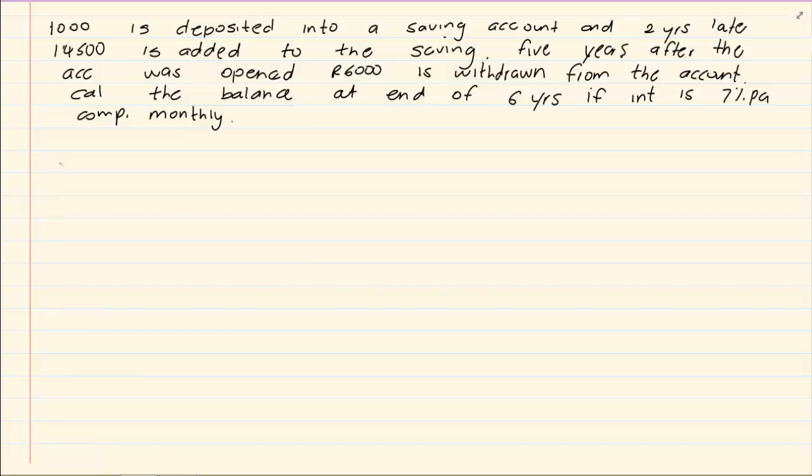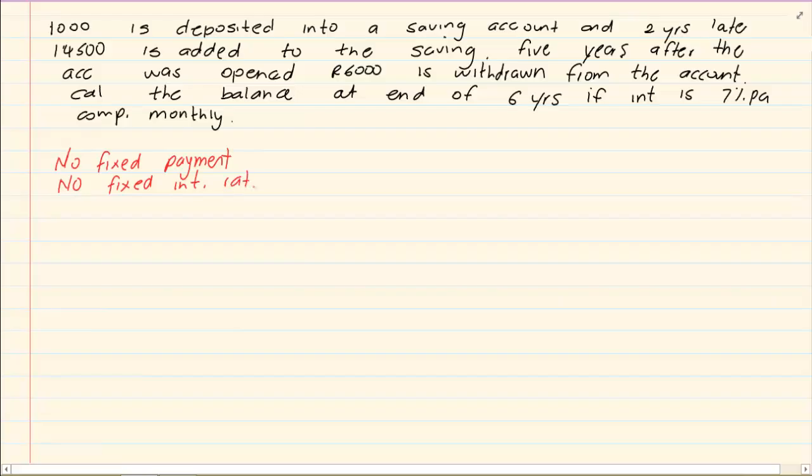Timelines you would use them specifically when you have no fixed payment. So in other words you randomly pay when you have, you take out when you need but there is no consistent payment, and there is no fixed interest rate which means that the interest rate can go up, it can go down, it's not consistent.